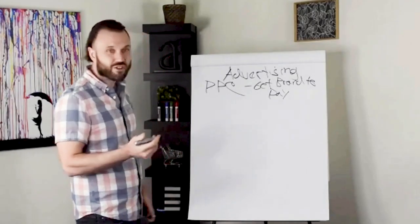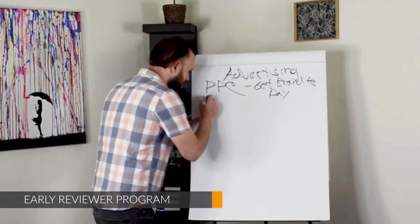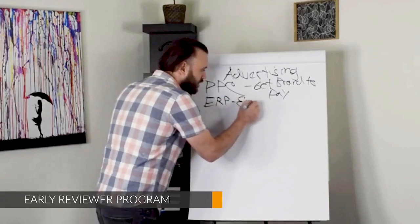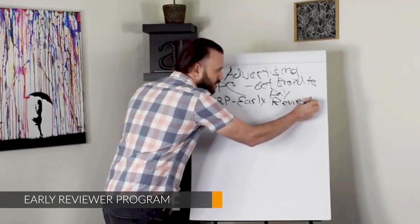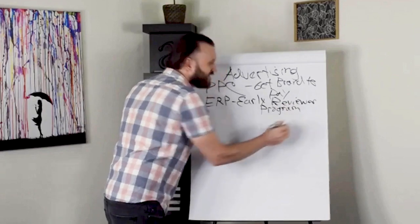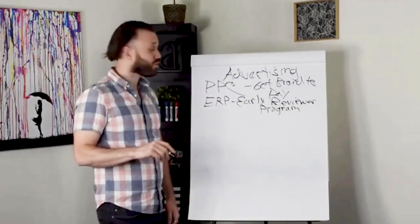Now, the next type of advertising we're going to dive into is called ERP, and this is early reviewer program. Now, this is so simple to set up. A lot of people don't use this. It's huge for growing brands.